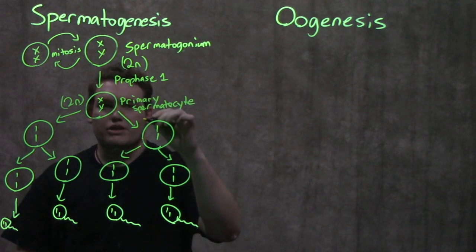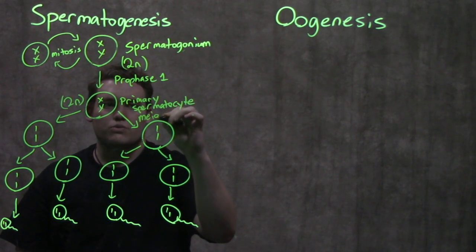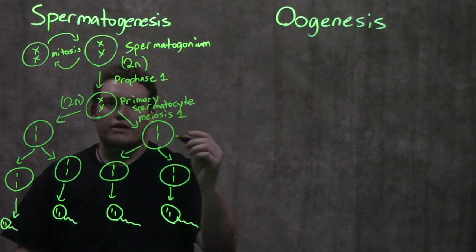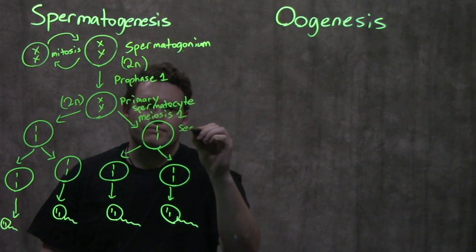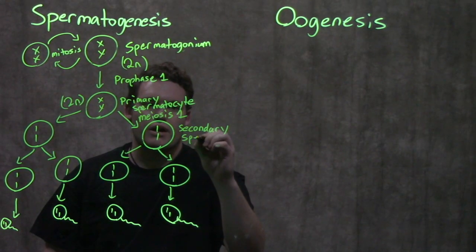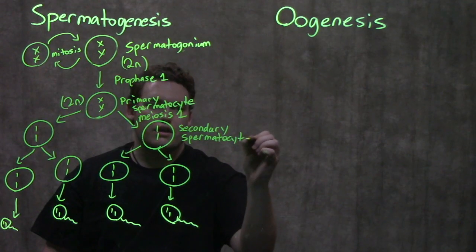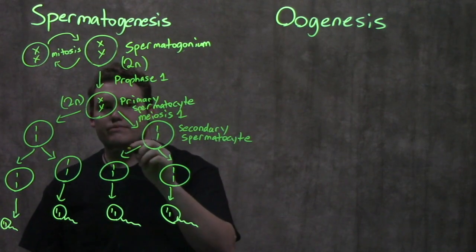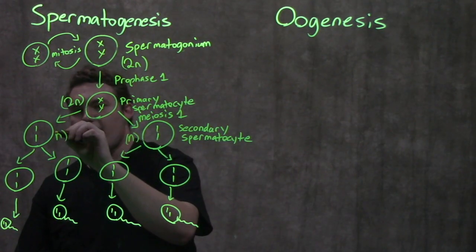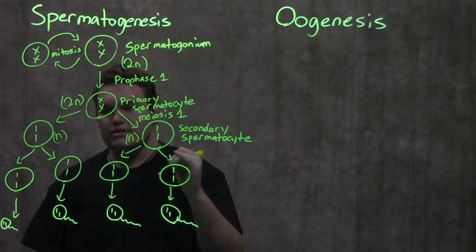Once it actually goes through meiosis 1, it becomes a secondary spermatocyte. Because we call meiosis 1 the reductional division, the secondary spermatocytes are both going to be N. This is where we actually halve our chromosome number, when we go from primary spermatocyte to secondary spermatocyte.